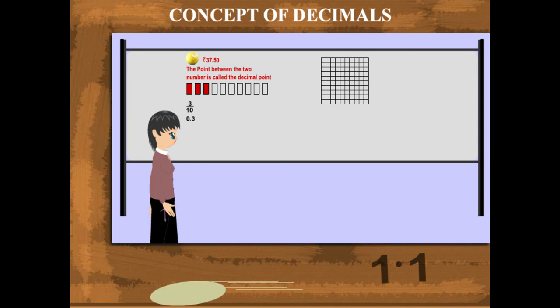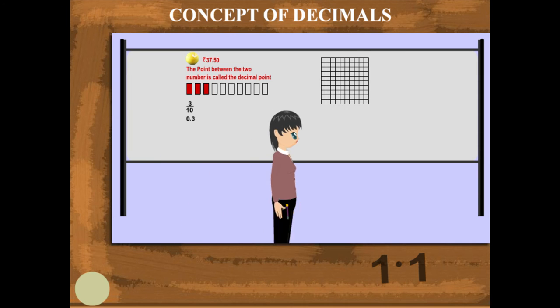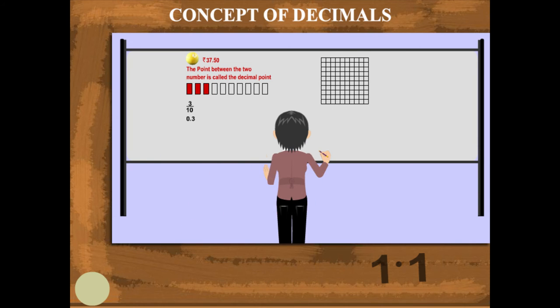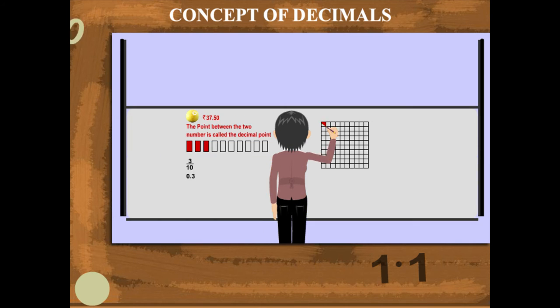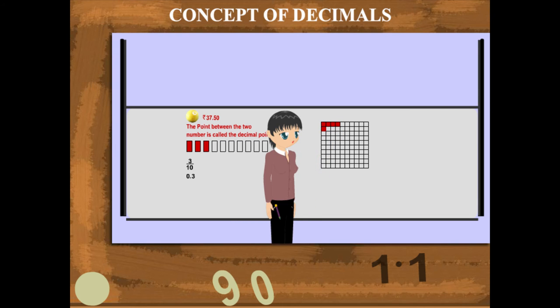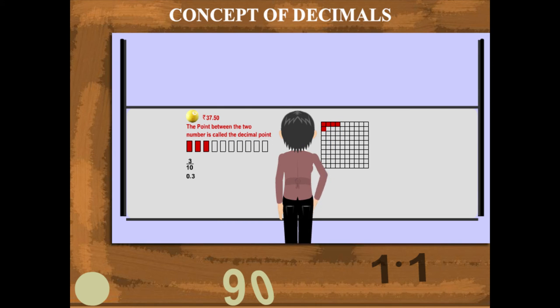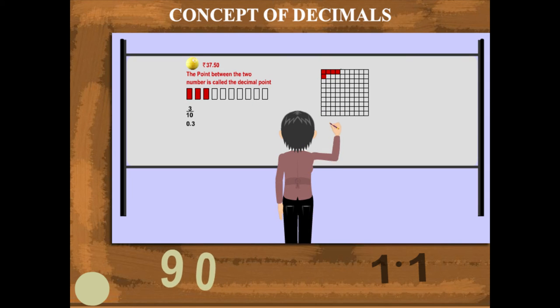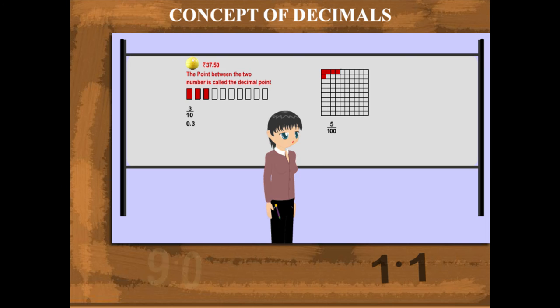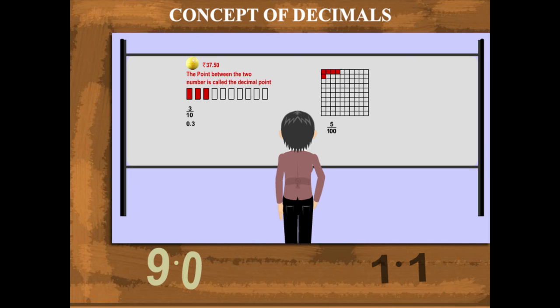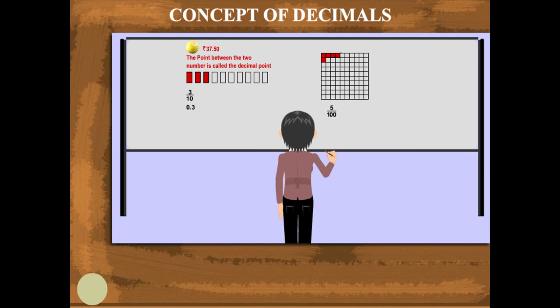Likewise, out of 100 squares, if we select 5, the fraction is 5 upon 100, and the decimal becomes 0.05.